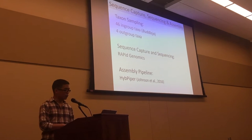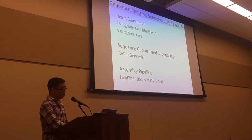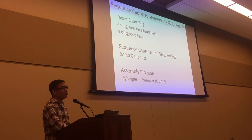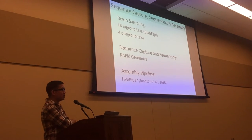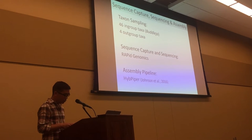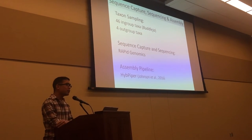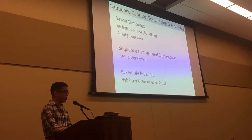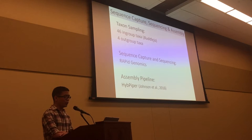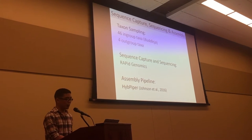After identifying the loci, I developed probes based on the Buddleja genome sequence, and then did sequence capture and sequencing on 46 species of Buddleja as the ingroup, and four more distantly related outgroup species — two in other genera in the same family, and two in other families in the same order. I outsourced the lab work to Rapid Genomics, and after sequencing, I assembled the reads with the pipeline HybPiper.